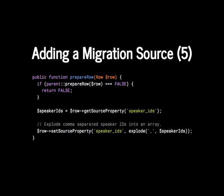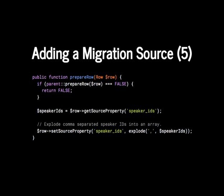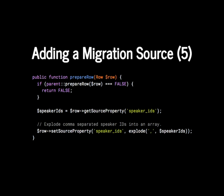If you've done Drupal 7 migrations, you may be familiar with the prepareRow method. It allows you to transform or massage data before it goes into Drupal 8. In this case, speaker IDs — if multiple speakers gave a talk — were comma-separated in one column, whereas in Drupal 8 we're mapping them to a multi-value entity reference field. So we just explode the string: if it's '1,2,3' in the source table, it gets passed through to Drupal 8 as an array of those values.